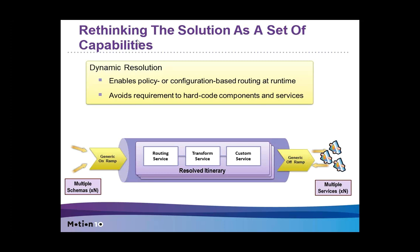With the ESB Toolkit, you want to rethink your solution as a set of reusable components that you can use in multiple scenarios. When you compare it with normal BizTalk, you typically create an orchestration for a specific message type and a specific scenario, making it difficult to reuse. With the ESB Toolkit, you first think about whether you can create an orchestration that is reusable across multiple message types and scenarios. In this picture you see an itinerary, which is a routing slip you can attach to your message.